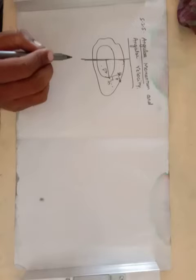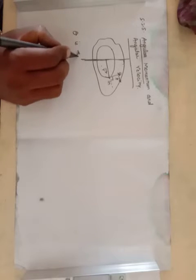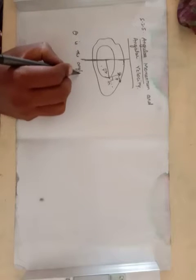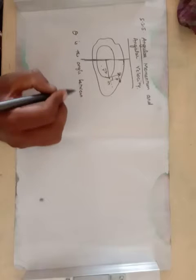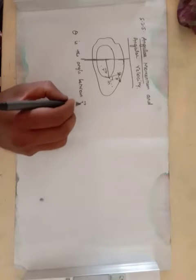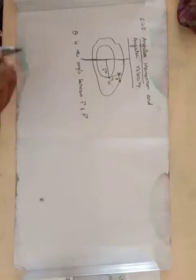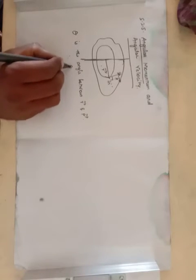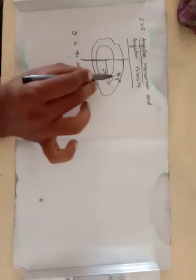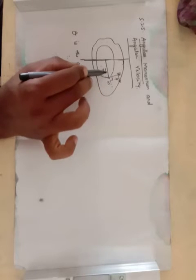Since the linear momentum is tangential to the circular path, we can calculate the angle between R vector and P vector. The angle theta between R vector and P vector is equal to 90 degrees. At any instant, the linear momentum is perpendicular to the position R vector, so theta is equal to 90 degrees.